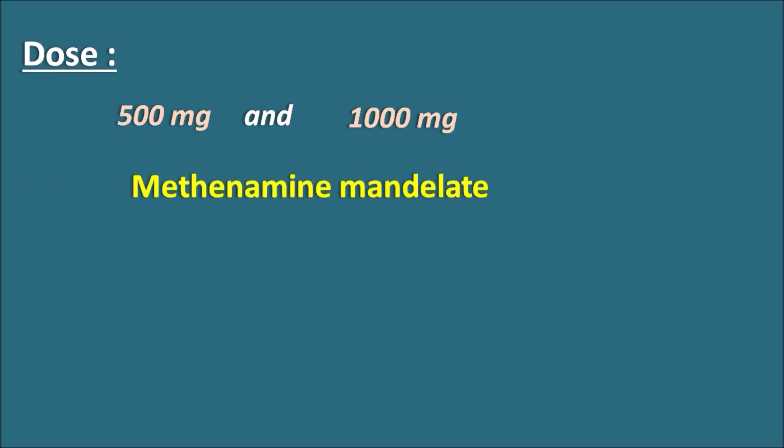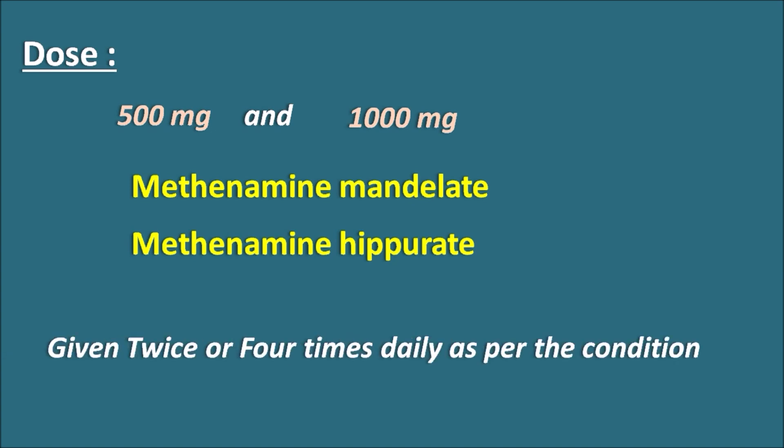What is the dose of Methenamine? Methenamine is available in two doses: 500 mg as well as 1000 mg. As already we have seen, it is given as its salts - Methenamine mandelate or Methenamine hippurate. Any of these salts can be given, and the frequency of dosing depends on which type of salt is given for treating urinary tract infections. It can be given either twice or four times daily as per the condition.